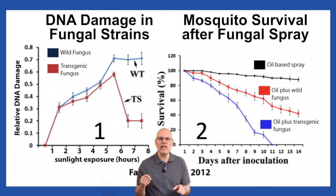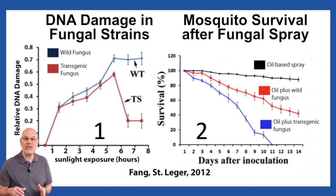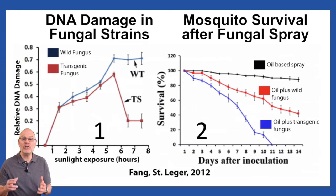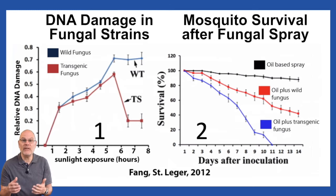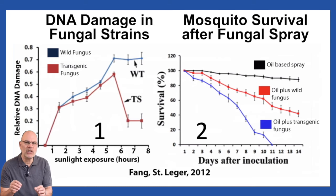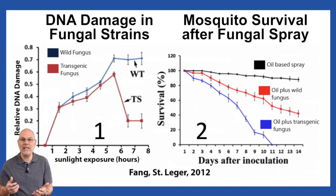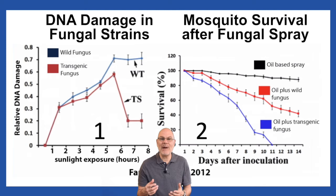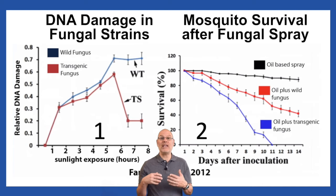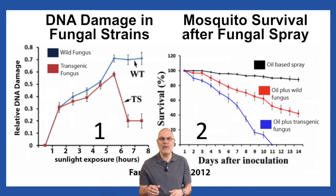Why is the transgenic strain so much more effective? You have to look at Graph 1 for the answer. Notice how from hours 2 to about 5, both fungal strains suffer a lot of DNA damage. But then, in the transgenic strain, starting between hours 5 and 6, DNA damage actually goes down. If DNA damage is going down, these fungi must be able to repair their DNA. So you can conclude that the genetically modified transgenic strain of fungi can survive even when exposed to the sun's ultraviolet rays because they can repair their sun-damaged DNA. As these fungi survive, they infect and kill the mosquitoes, explaining the low mosquito survival rate in that treatment.